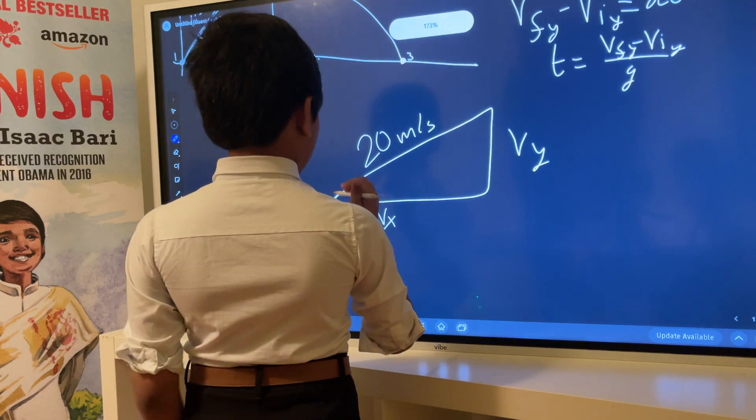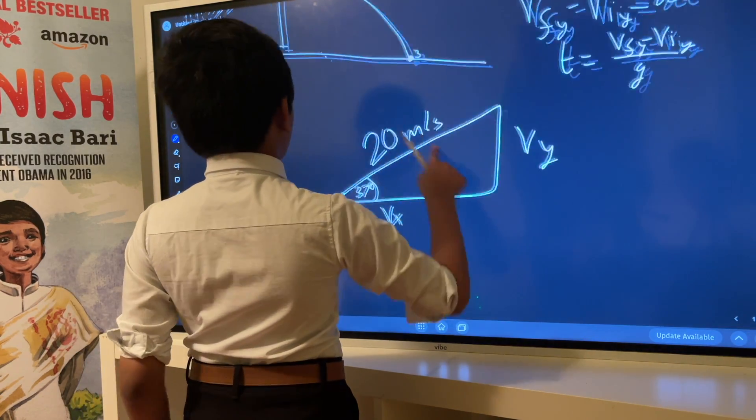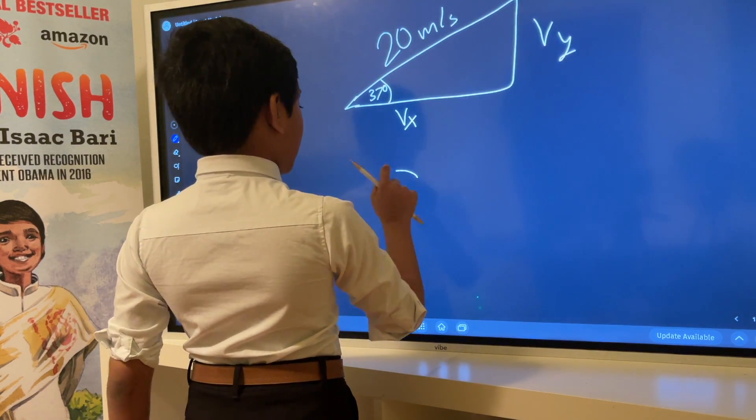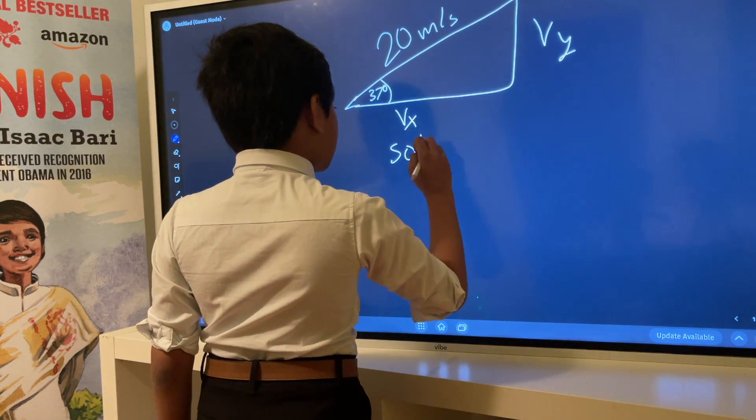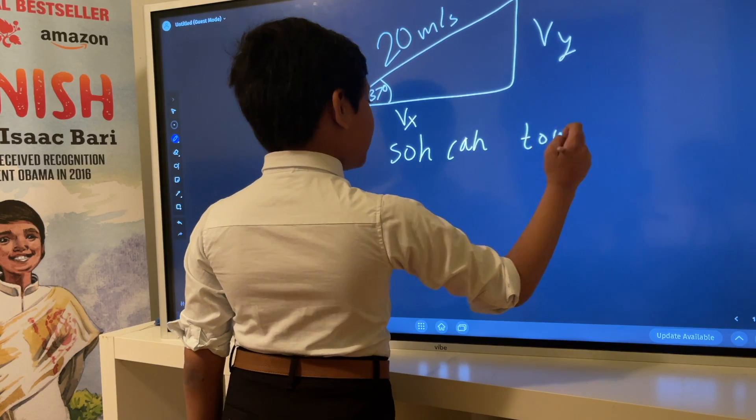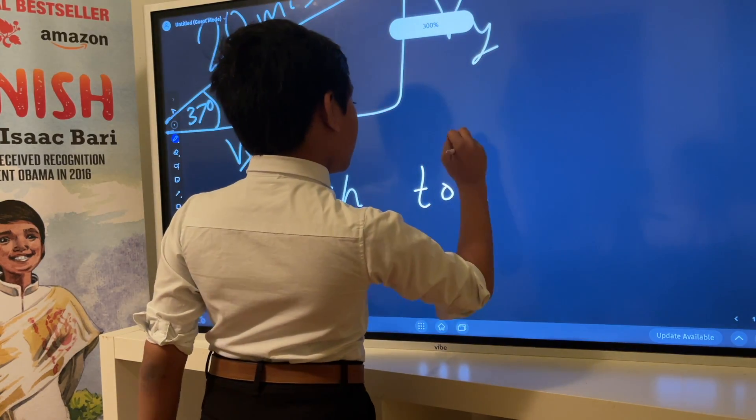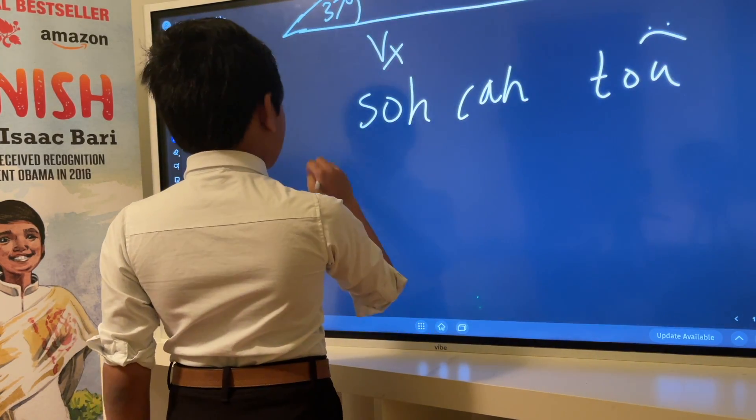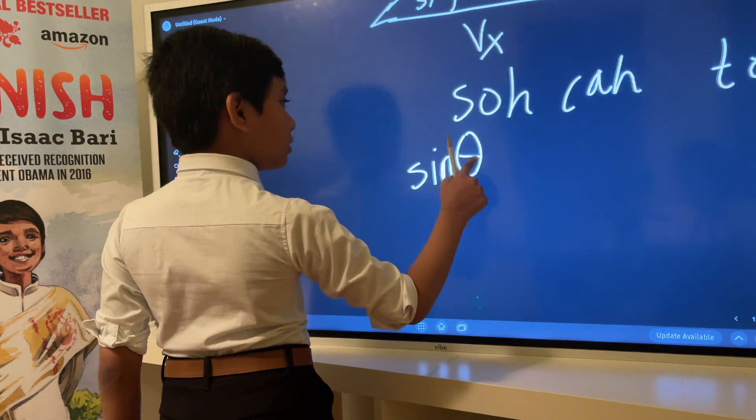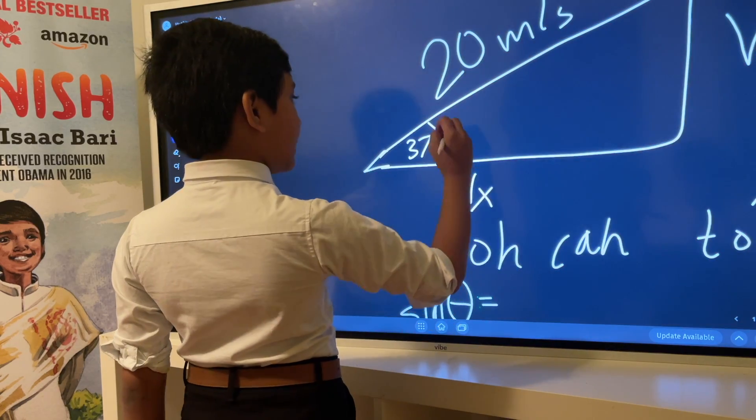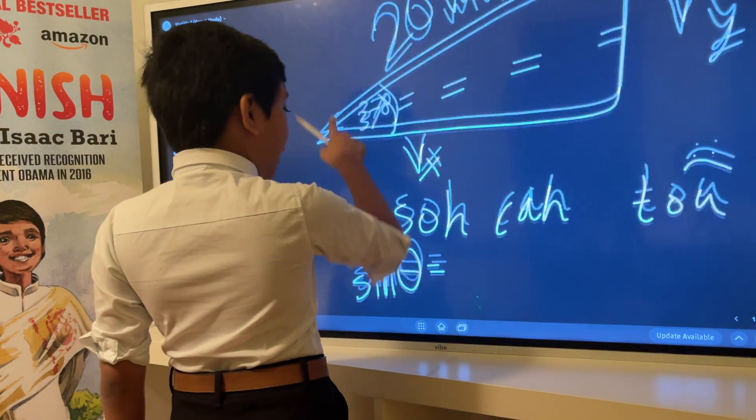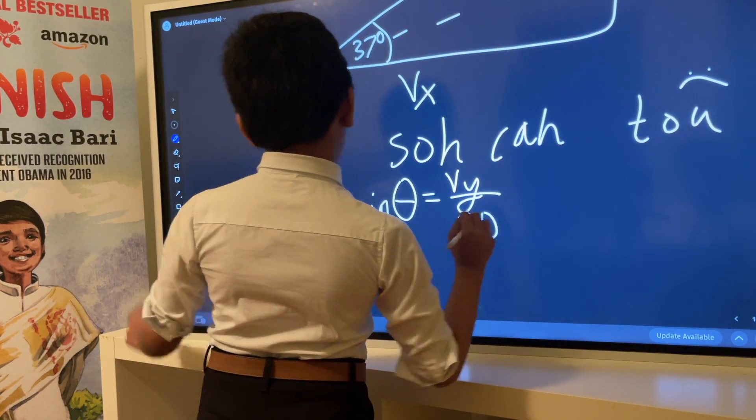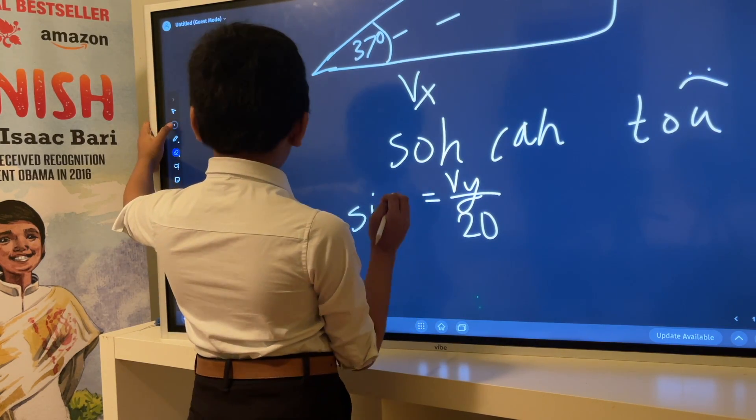We know what the angle is, it's 37 degrees as we have seen. Now we want to find v_x and v_y, and so we can use SOHCAHTOA, specifically only the SOH and CAH. TOA is being left out, he's sad. Anyway, we get sine theta equals the opposite to the angle, which is v_y, over the hypotenuse, which is 20.